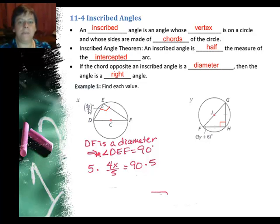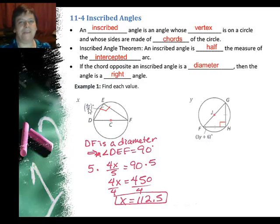Once I do that, I'm going to get 4X equals 450. 4X is being multiplied by 4. I can undo the multiplication by 4 by dividing by 4. And using my calculator, I get X equals 112.5.